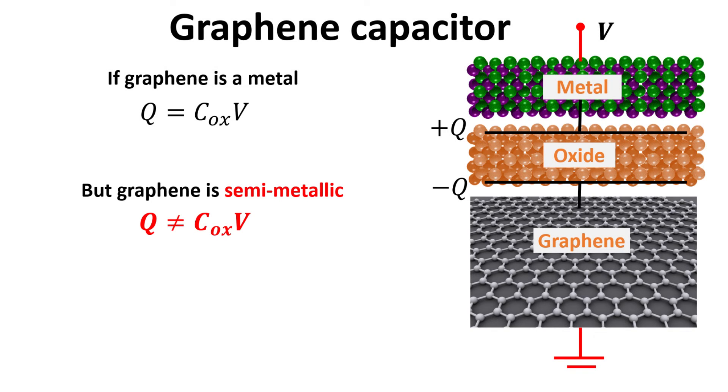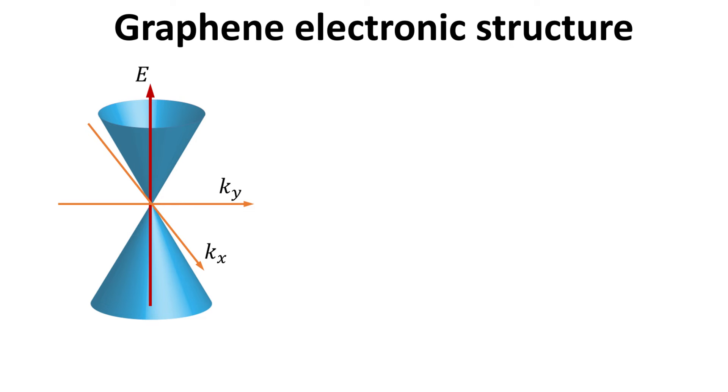However, graphene being semi-metallic, implies that it might not have sufficient electron or hole carriers to screen off the oxide electric field, leading to modulation of its Fermi energy. Thus, a fraction of the applied voltage will be expended to modulate graphene's Fermi energy. We shall elaborate on this point.